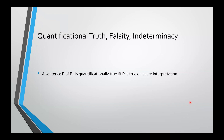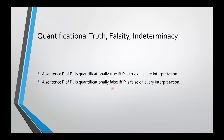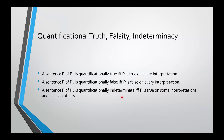Analogous to truth-functional truth, falsity, and indeterminacy, you have quantificational truth, falsity, and indeterminacy. A sentence P of PL is quantificationally true if and only if P is true on every interpretation. It's quantificationally false if it's false on every interpretation, and quantificationally indeterminate if it's true on some interpretations and false on others. These are basically the same as for SL, except defined in terms of interpretations instead of truth-value assignments.